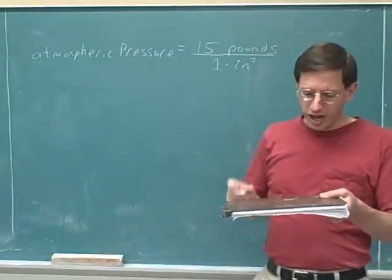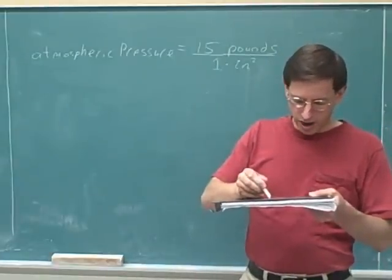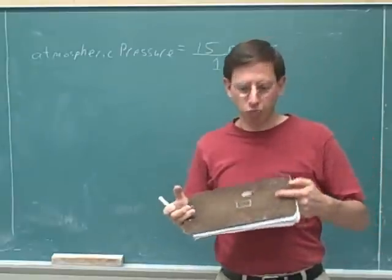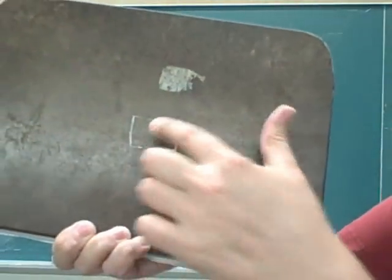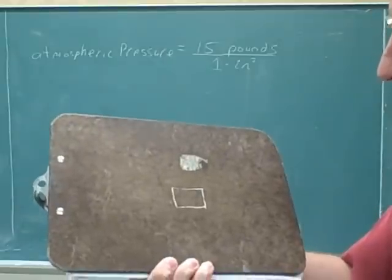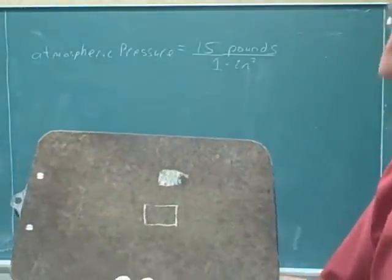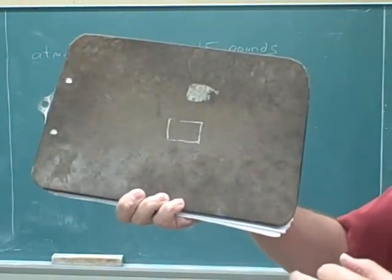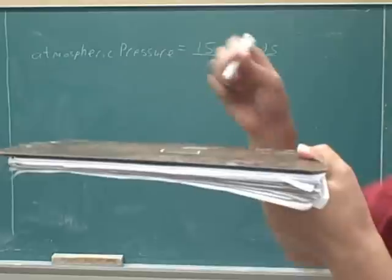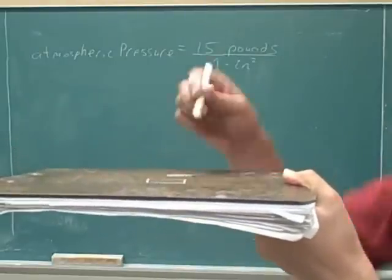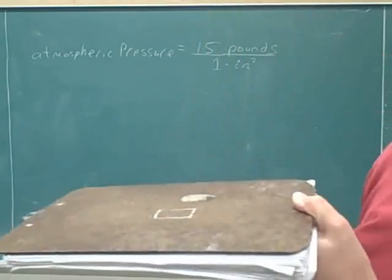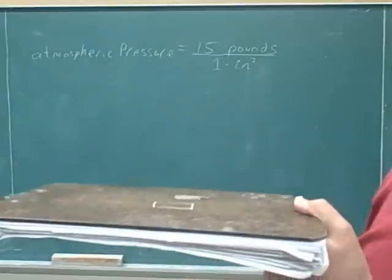For example, maybe I could take my clipboard here and make a little square that's one square inch in size. Here's the little square — actually it looks like that's more than one square inch. I kind of forget how big an inch is. But let's pretend that this is an area of one square inch. How much atmosphere is there directly above that rectangle? What's the weight of the atmosphere above this rectangle? The atmosphere starts down here and goes up all the way into outer space — there's a lot of air on top of this little rectangle.